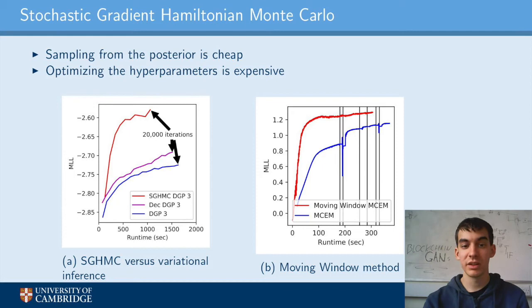Our MCMC sampler of choice is Stochastic Gradient Hamiltonian Monte Carlo, because it can generate samples from the posterior using only stochastic gradient estimates. On figure A, we can see that SGHMC converges significantly faster than the baseline models.